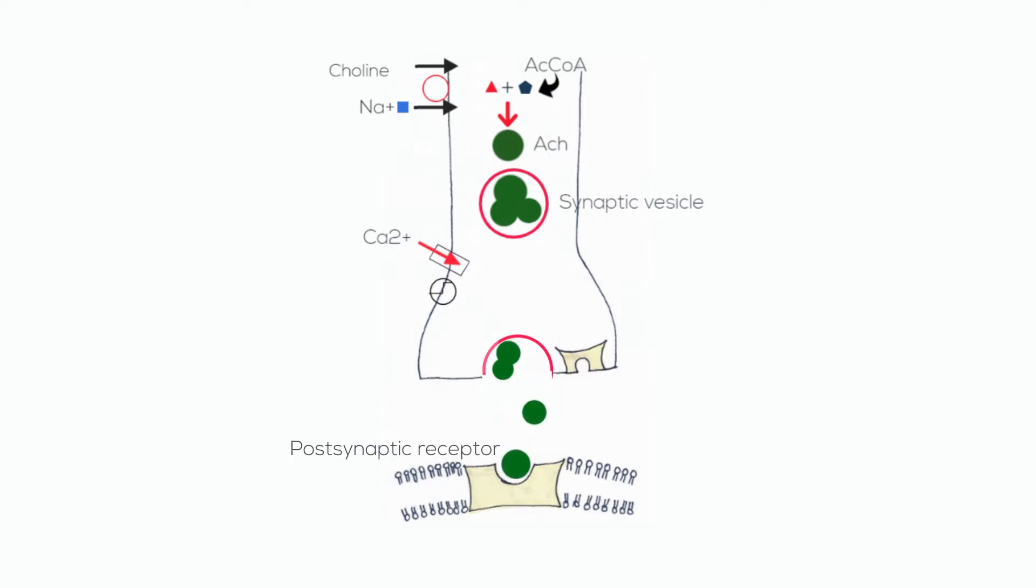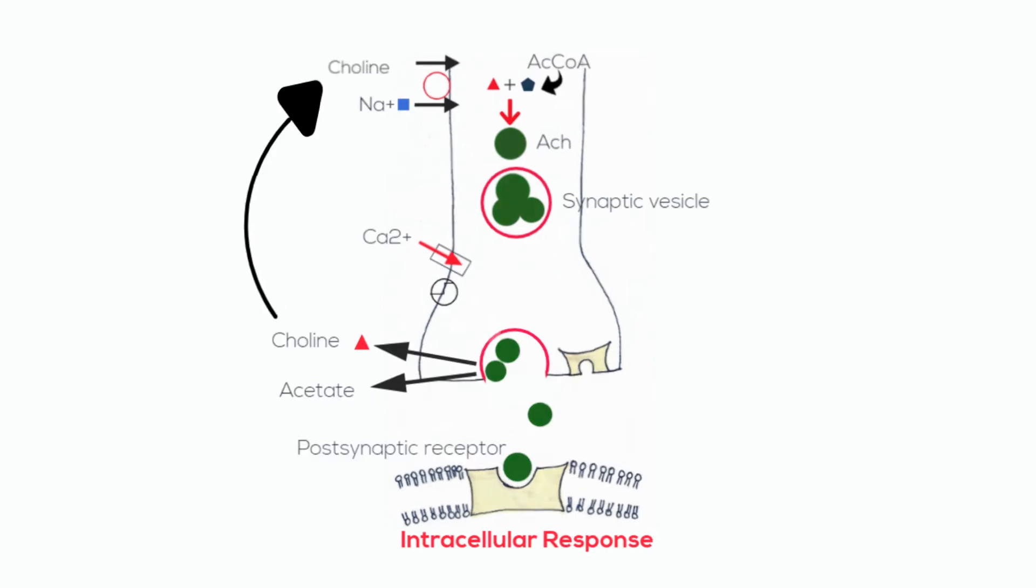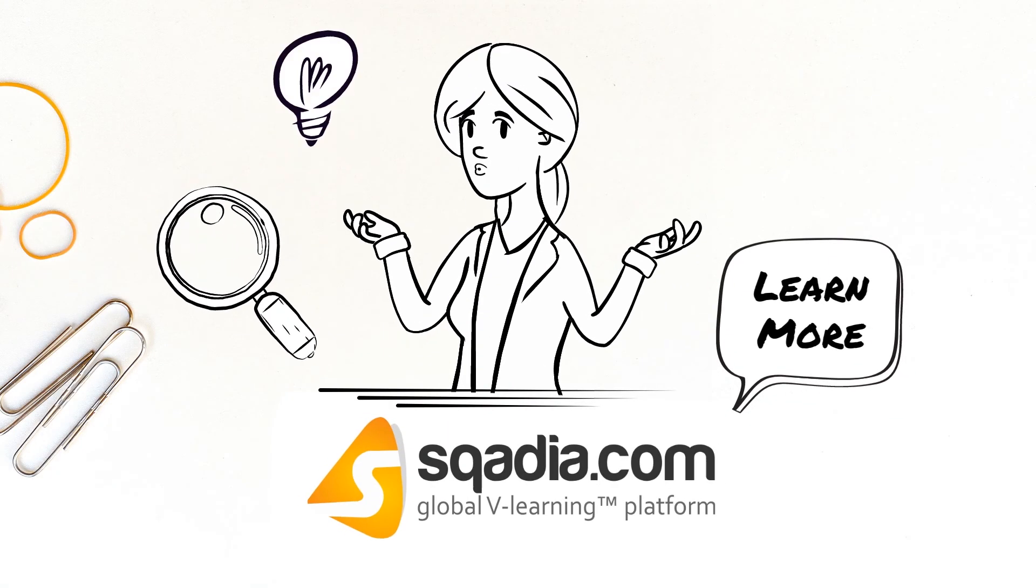The acetylcholine binds to receptors to produce the intracellular response. Some of this acetylcholine is degraded back to choline and acetate. This choline is recycled and reused to form acetylcholine. Acetylcholine can also bind to presynaptic receptors and be reuptaken.